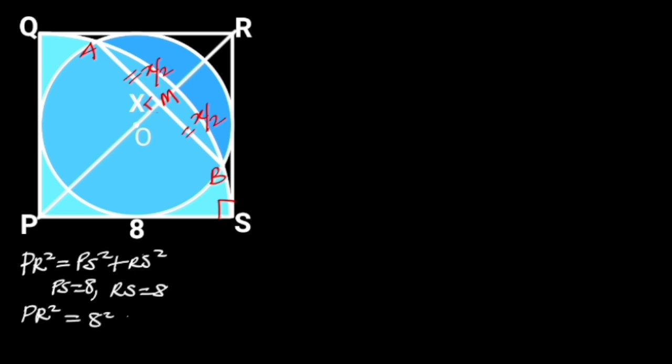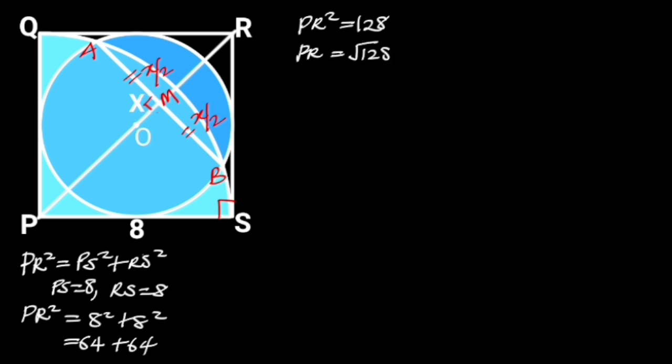Substituting these values in the formula will give us PR squared is equal to 8 squared plus 8 squared. 8 squared is equal to 64. 64 plus 64 is equal to 128. So PR squared is equal to 128. Taking the square root of both sides will give us PR is equal to 8 root 2.